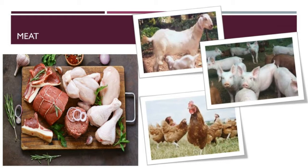Next - meat. Meat is animal flesh that is eaten as food. Most often it is used to describe skeletal muscle and the fat found with it. Some people eat the flesh of animals such as chicken, sheep, rabbit, pig, goat, camel, buffalo, fish, crab, prawn, lobster, and many more. Animal meat is considered part of the diet by most people. Meat consumption is considered essential for its nutritive values. Especially, chicken breeding is done on a large scale in the form of poultry farming for economic purposes.